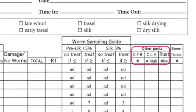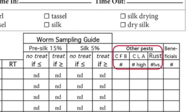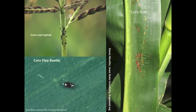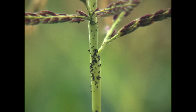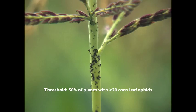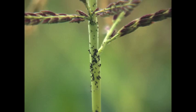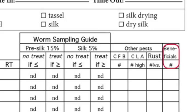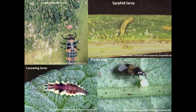In addition to these three larval pests, there is also space in the form for other pests, including corn leaf aphids, corn flea beetles, and rust. For corn leaf aphids, you will want to scout at tassel emergence and use a threshold of 50% of the plants with more than 20 corn leaf aphids per tassel. Beneficial insects that will feed on moth eggs, aphids, and other pests can also be indicated on the form, like lady beetles, syrphids, lacewings, and pirate bugs.